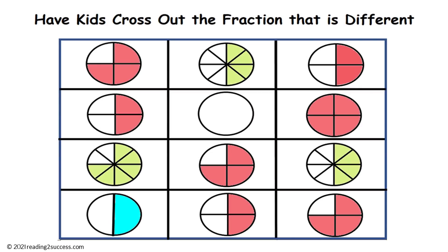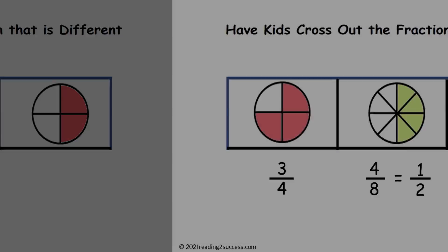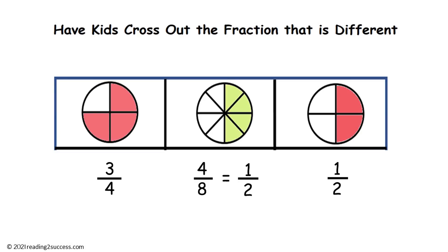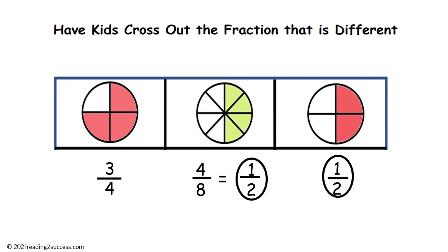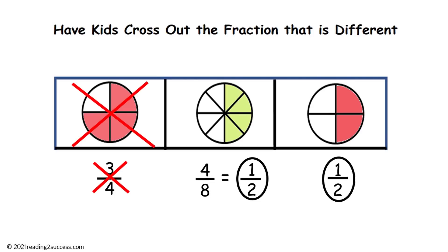Now have kids cross out the fraction that is different, and have kids talk through each answer to show their understanding. The first fraction is three-fourths. The second is four-eighths, which also equals one-half. The third is one-half. The second and third are both one-half — they are equivalent fractions. The first one is three-fourths and is different, so it should be crossed off.